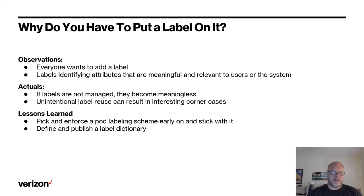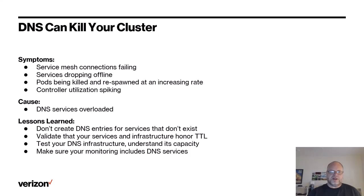Everyone wants to add a label — labels for storage classes and node capabilities are common, but we've seen an increase in CNF-requested labels. Many are three- or four-letter acronyms, and we've already had label collisions within a cluster. The lesson: define a labeling scheme for your platform, publish it, and use it. Kubernetes is also very dependent on DNS — disruption in DNS can shut down a cluster. We encountered this when new CNF deployments overwhelmed DNS instances. Investigation found CNF deployments were pre-provisioning DNS entries for pods that didn't yet exist, and the service mesh was not honoring the TTL supplied by DNS. Lessons: don't create DNS entries before you need them, validate all services honor TTL, and understand your DNS infrastructure capacity.